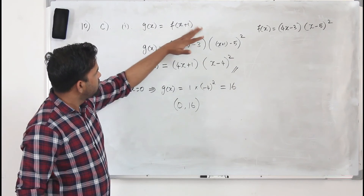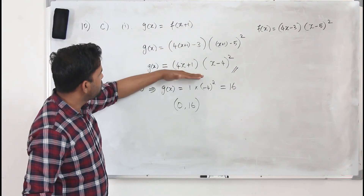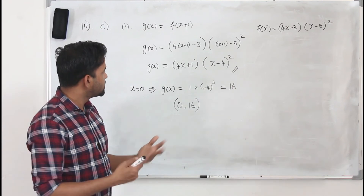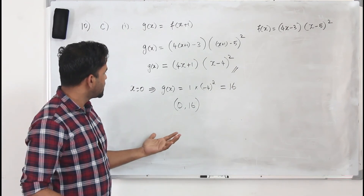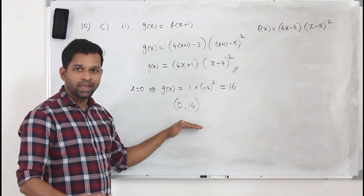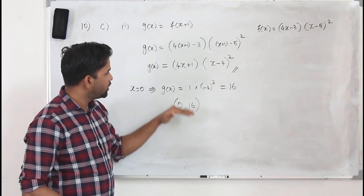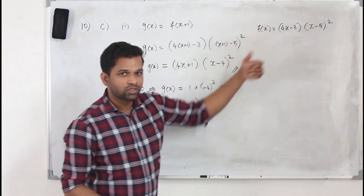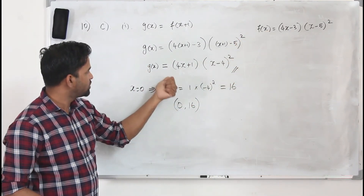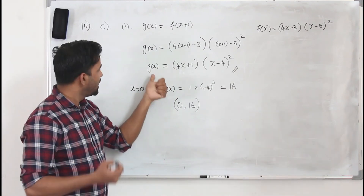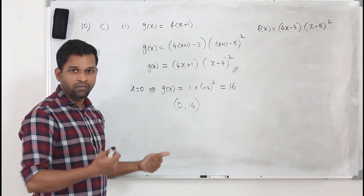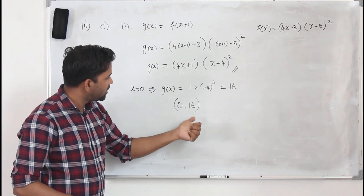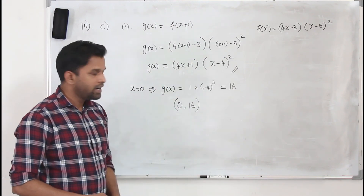This is how we find g of x. You don't need to sketch the curve because the question only asks for the y-intercept of the new curve. Substitute x equals zero into g of x — not into the original function — because they are asking for the y-intercept of g of x. Substituting x equals zero gives the y-intercept as 16.